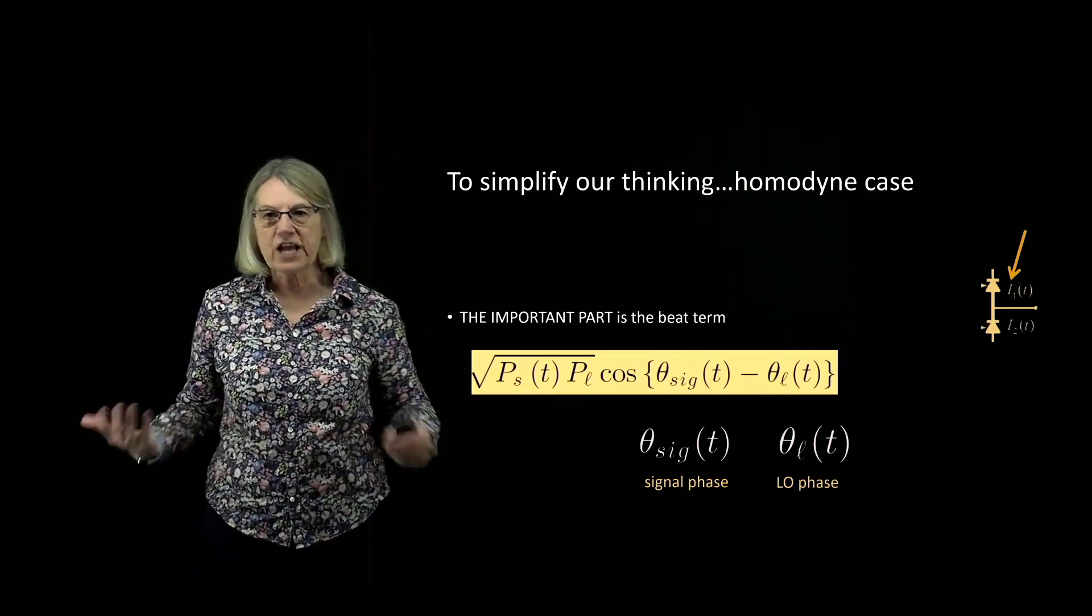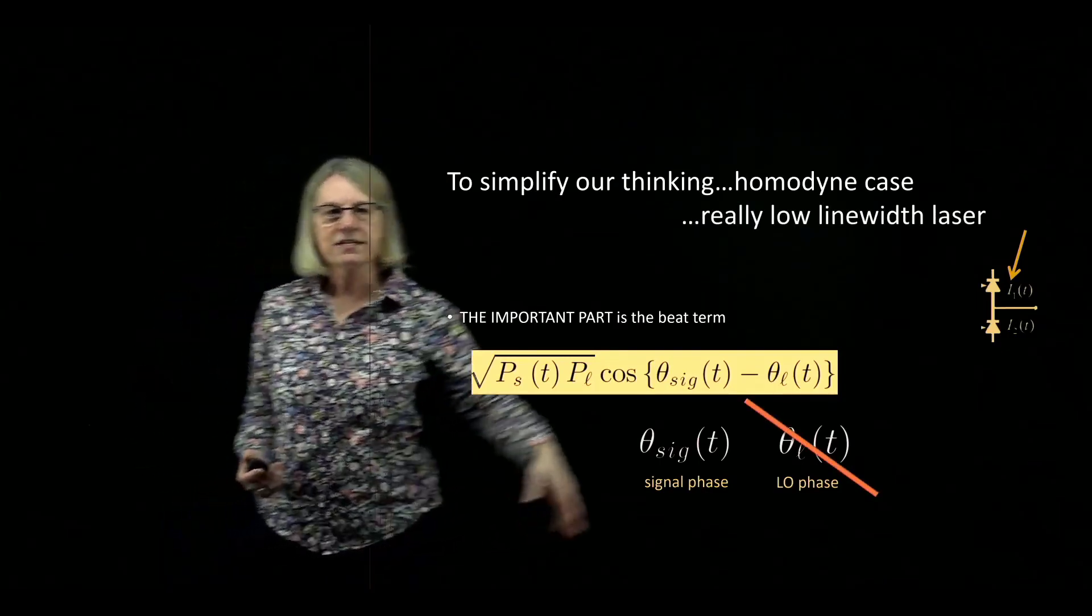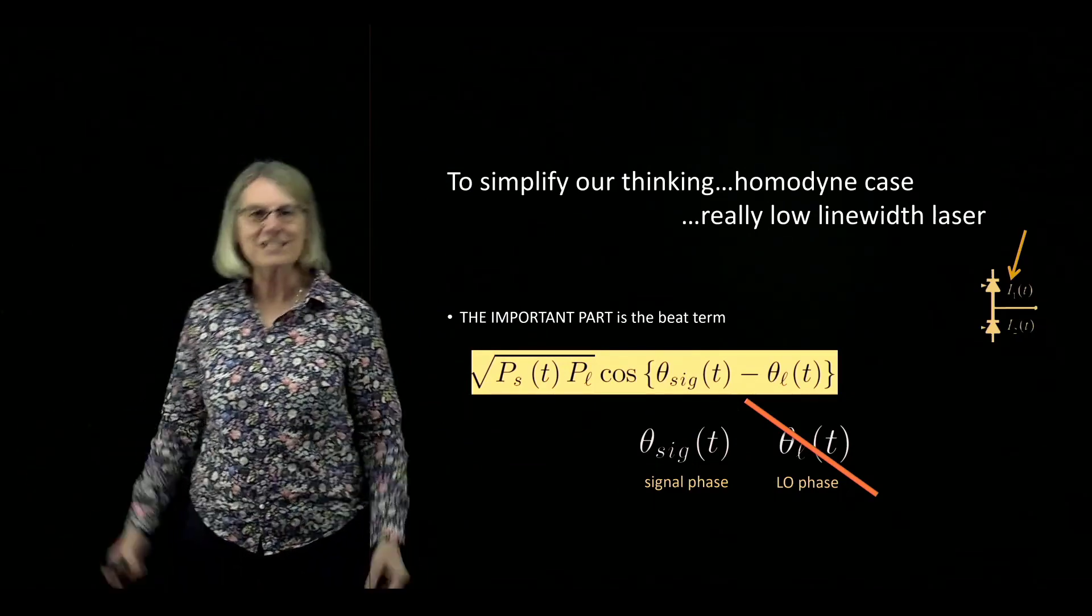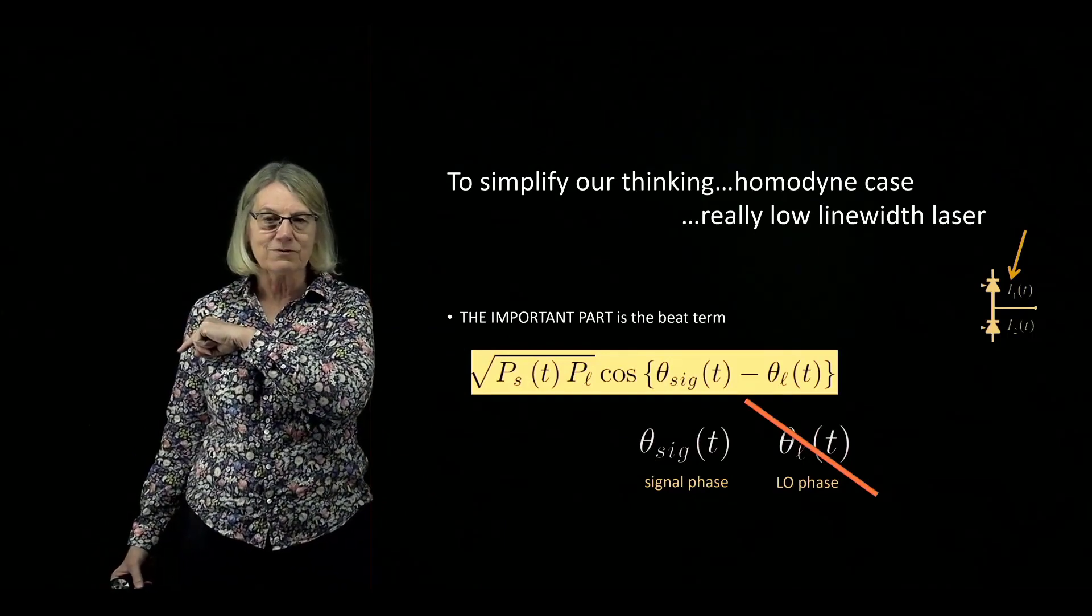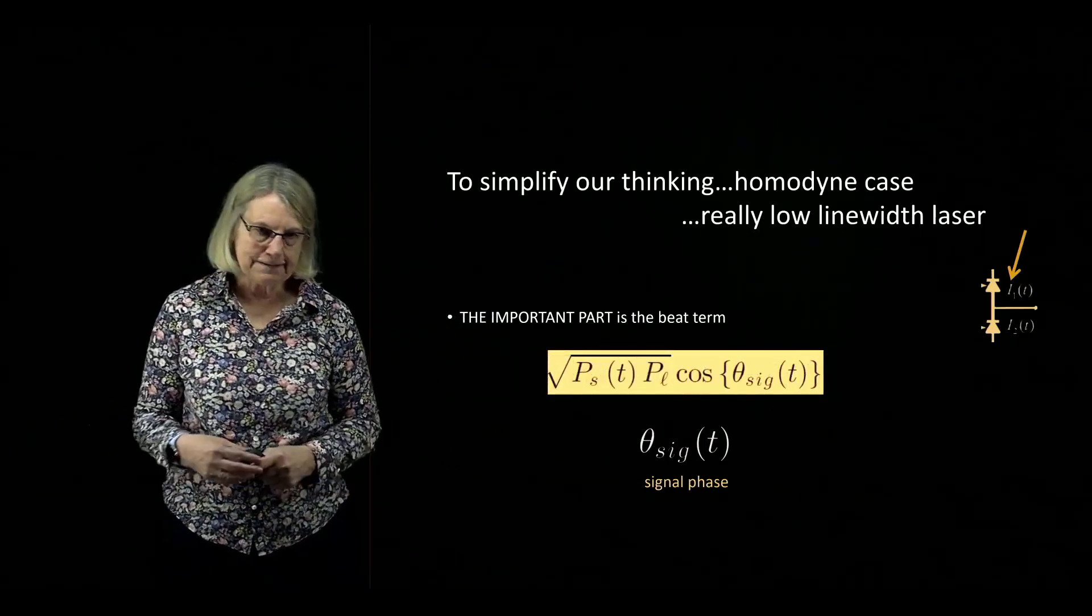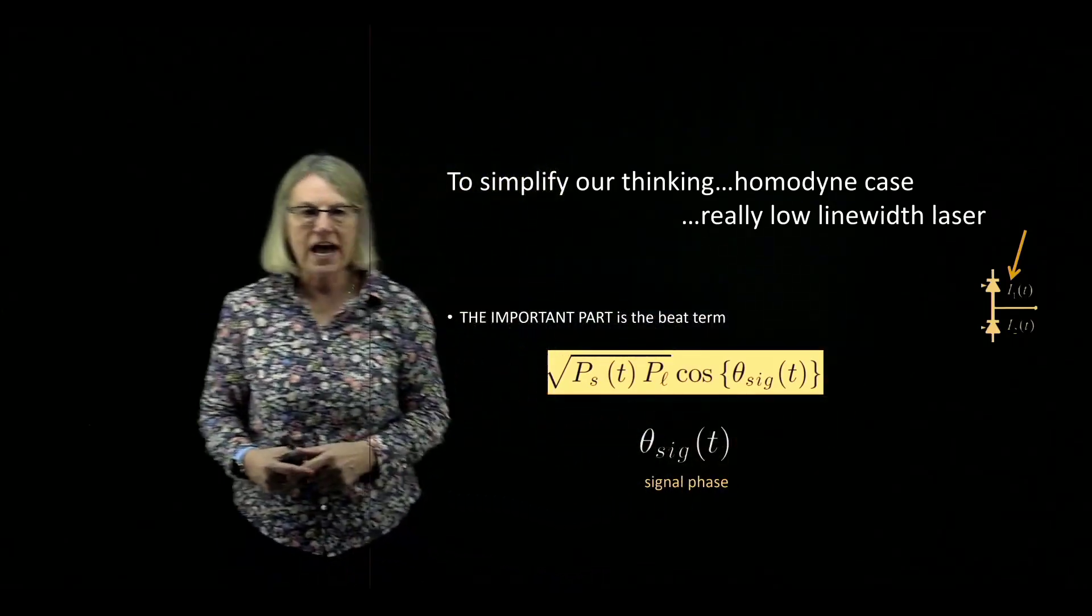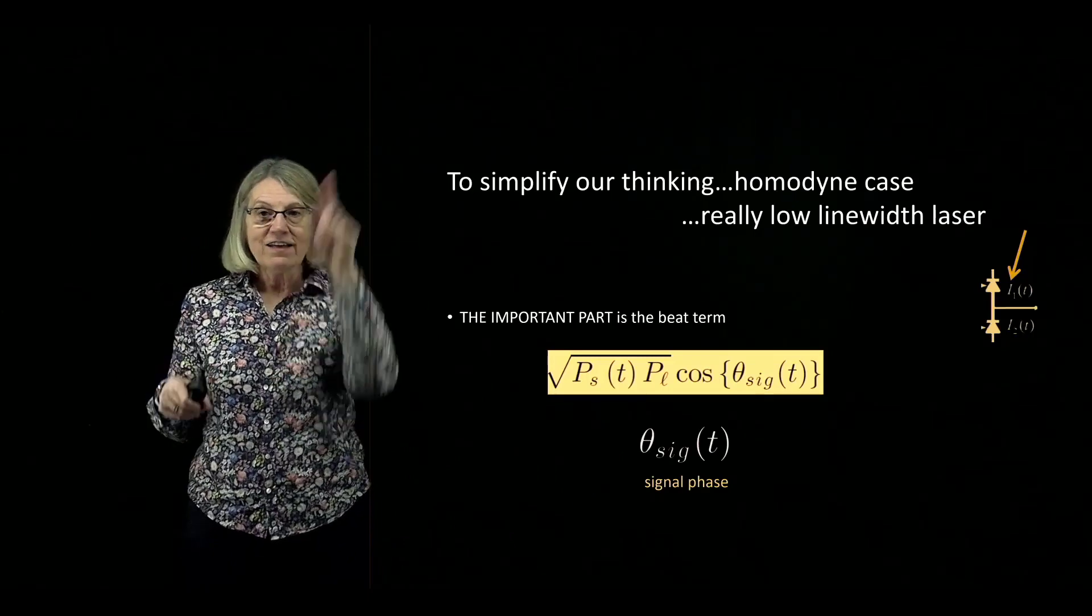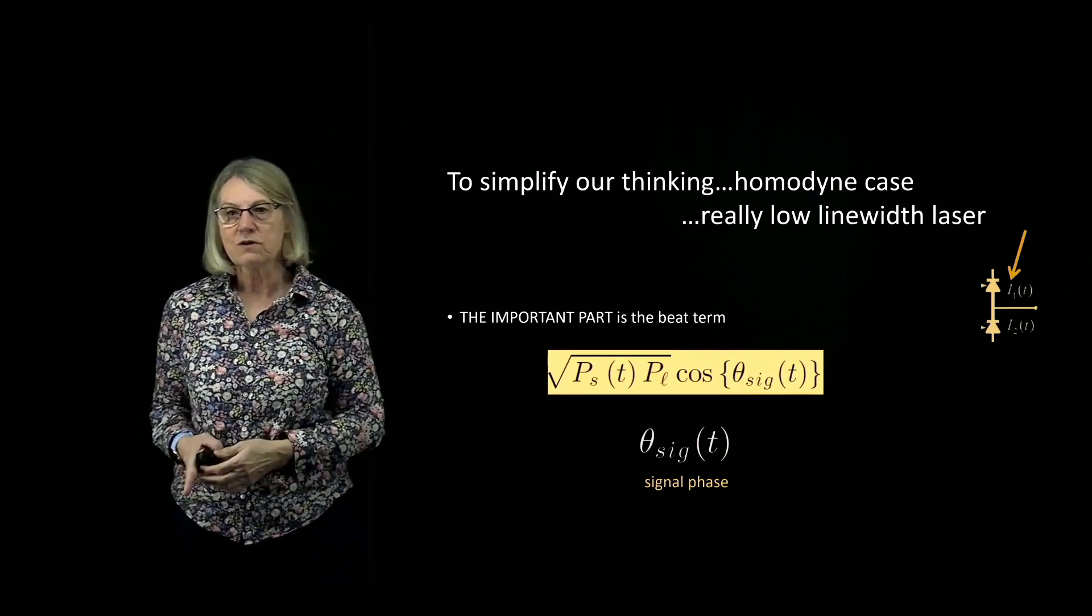In the homodyne case, we don't have an intermediate frequency and it really is the difference in phase between these two. I'm going to make another simplifying assumption - that this local oscillator phase is actually very small. That means we have a very high quality laser, very low linewidth, so I can forget about it. If this is not truly the case, we'll take care of that in digital signal processing. So now this important part, this beat term, the cross term inside the photocurrent on the upper photodiode, is proportional to the cosine of the signal phase. That's where I'm putting my data. I'm using QPSK - there's four possible phases, and I'll be able to see what phase I'm receiving to identify which symbol was actually transmitted.